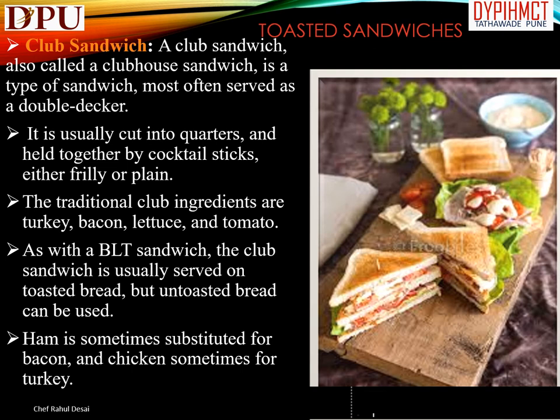Club sandwich, also called the clubhouse sandwich, is a type of sandwich most often served as a double decker. It is usually cut into quarters and held together by cocktail sticks. The traditional club ingredients are turkey, bacon, lettuce, and tomato — similar to a BLT sandwich. The club sandwich is usually served on toasted bread. Ham is sometimes substituted for bacon and chicken sometimes for turkey.